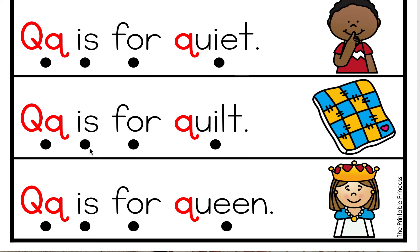Good job friends. Coo is for quilt. Let's do it together — coo is for quilt. Good job. Our last one: coo is for queen. Let's do it together — coo is for queen.